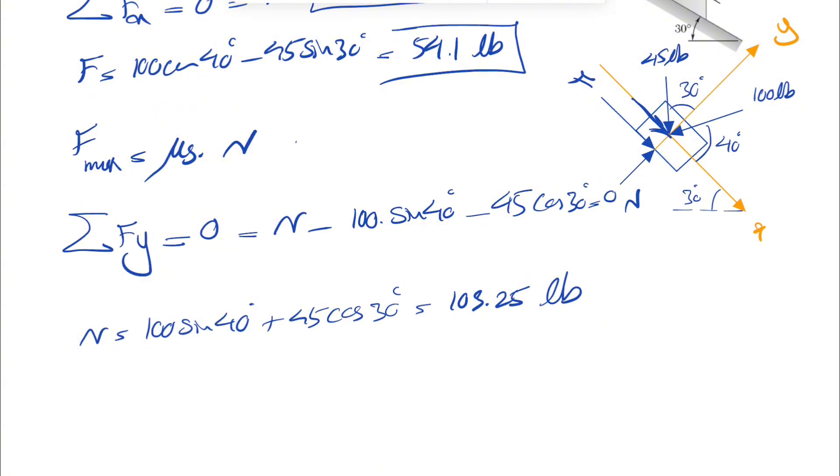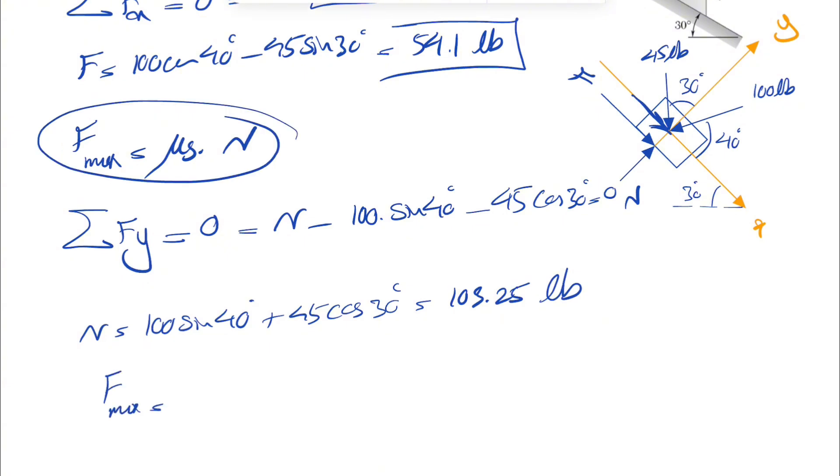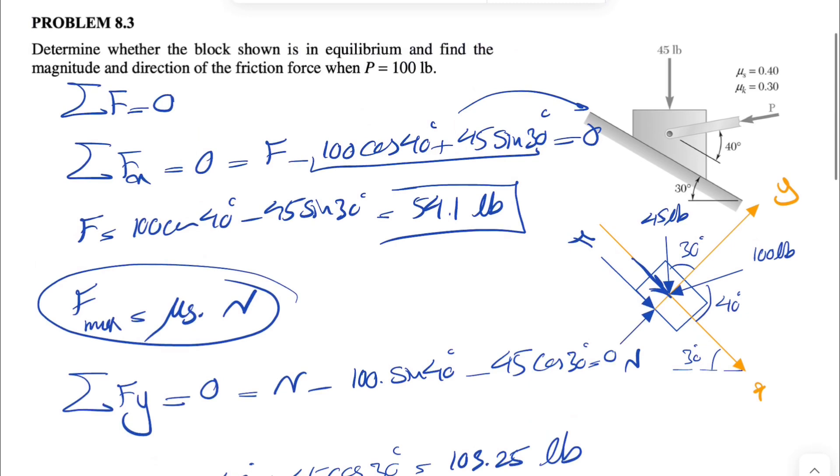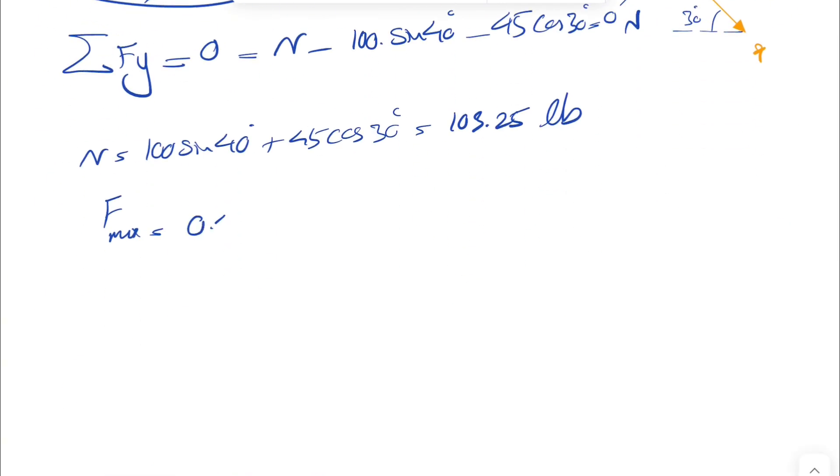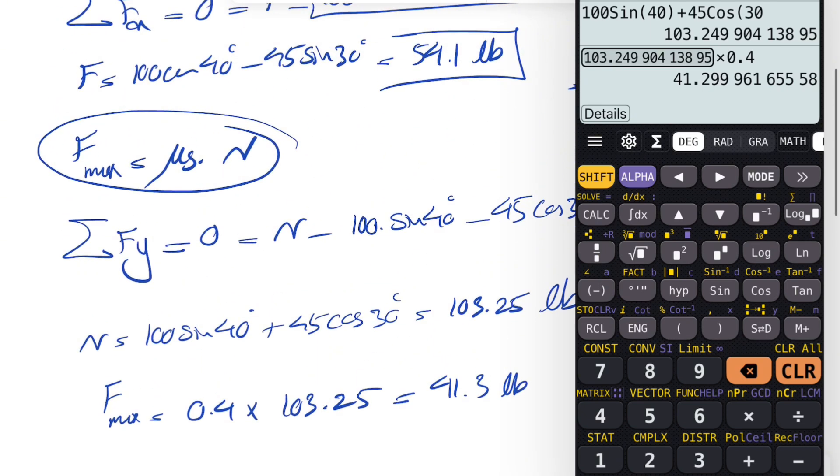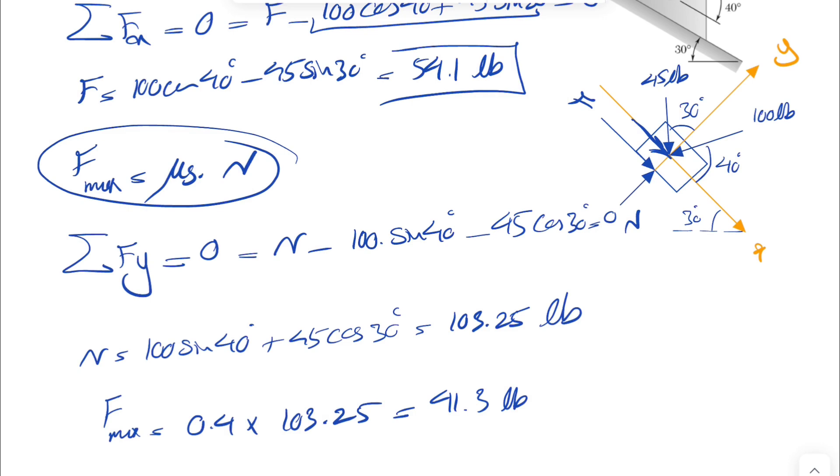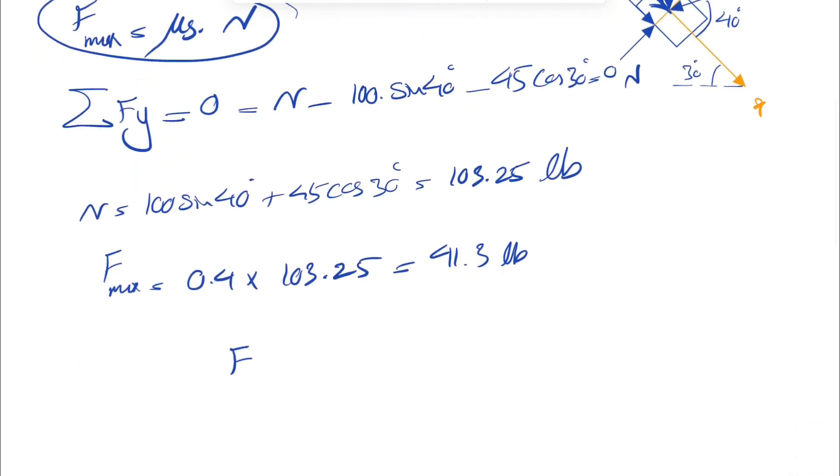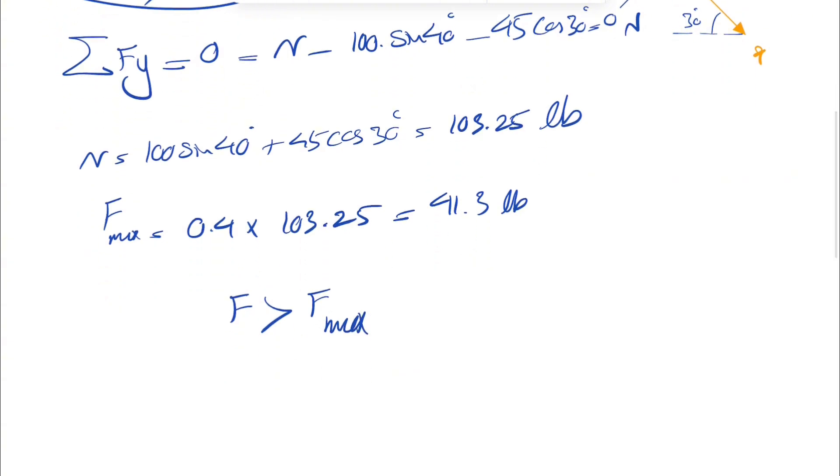And now we can find our maximum friction. So we have the static coefficient 0.4. So 0.4 times the N, 103.25. So times 0.4. This is going to give us 41.3 pounds. And that's the maximum friction. But if I look at our F, we'll see that our F is actually greater than F_x, our maximum friction, which means the box is actually moving.